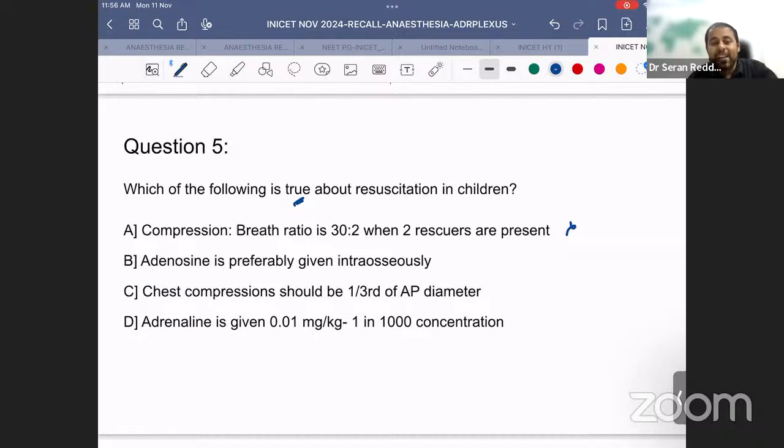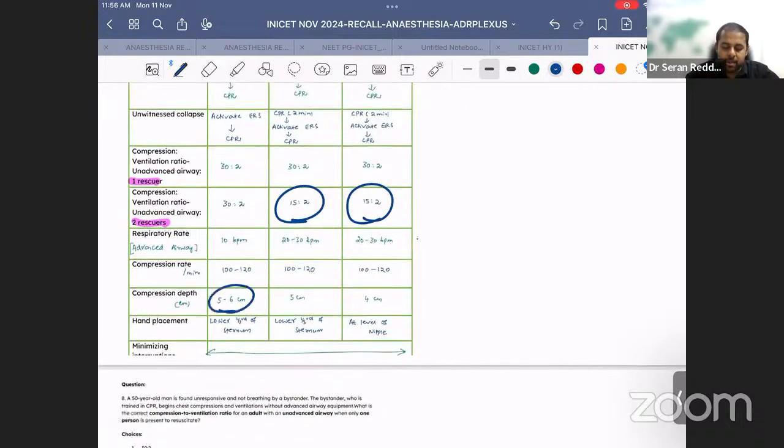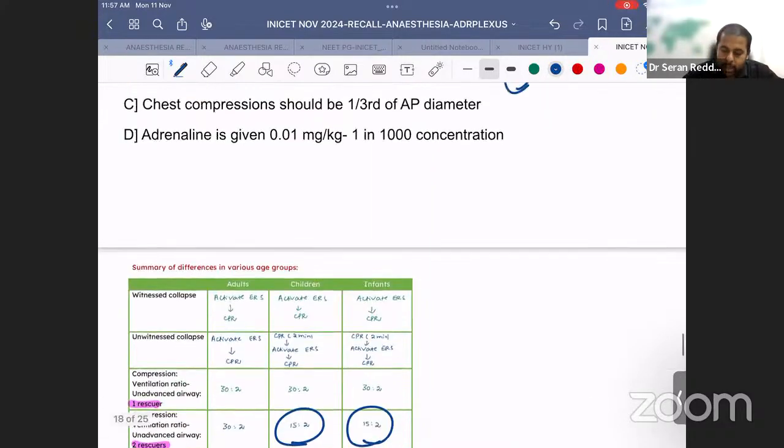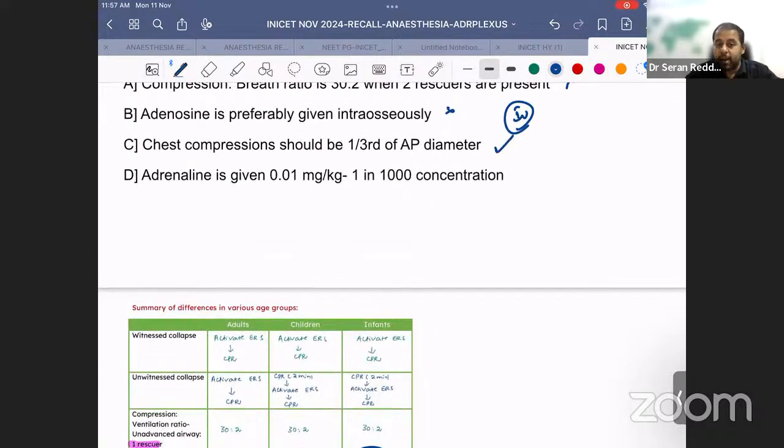Adrenaline is preferably given intraosseously - any drug we prefer only IV. If there's a central line, we prefer through central line. Intraosseously is a wrong statement. Chest compression should be one-third of AP diameter - in adults it is 5-6 centimeters. It is like one-third when you see the AP diameter is close to 10-12 centimeters. One-third of this is close to that. This is the correct statement. Adrenaline is given 0.01 milligrams per kg - this is correct, but not in 1:1000 concentration. It is 1:10,000 concentration. In the previous examination, they asked rather than 1:200,000, they gave 1:100,000. So it is not 1:1000 concentration, it is 1:10,000 concentration.